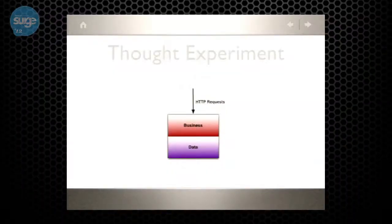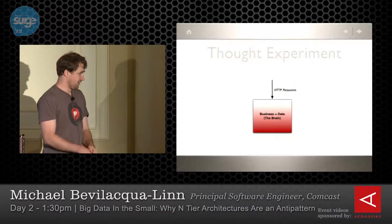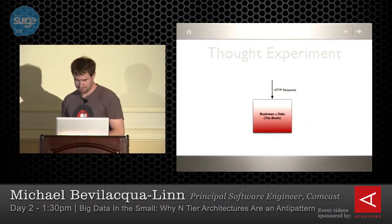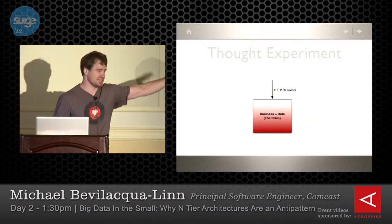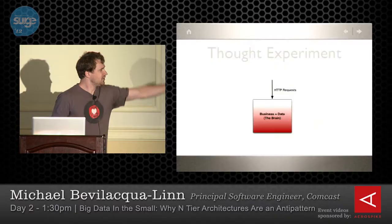So let's do a thought experiment where we've taken the three-tier thing. The presentation layer for us is usually a web browser. The business layer is some code — Java, Ruby, whatever. Then you've got a database, maybe relational or non-relational. What happens if we just kind of jam the data layer and business layer back together? What does that look like?